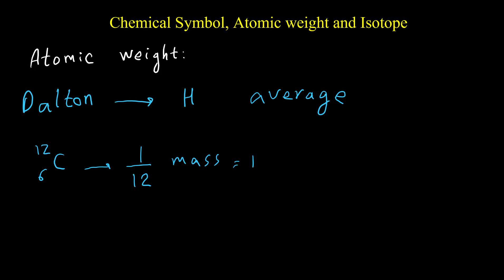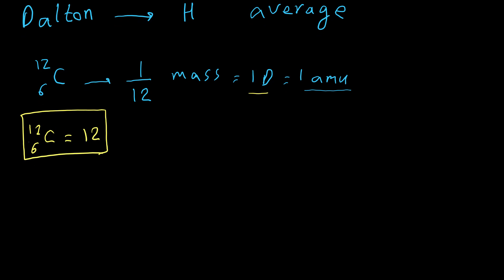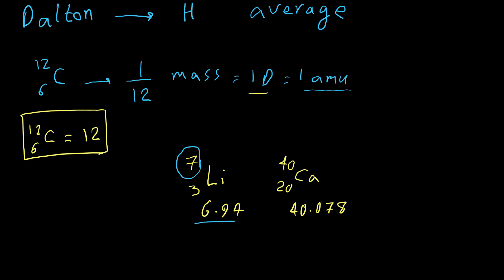We call this unit one dalton, or one AMU — atomic mass unit. Based on this definition, the mass of carbon-12 is exactly equal to 12. When we look at the periodic table, most elements have fractional masses — for example, lithium is 6.94 and calcium is 40.078. This is the average mass of all isotopes, not simply the mass number. Lithium has mass numbers of 6 and 7, and calcium has atomic number 20 and mass number 40.